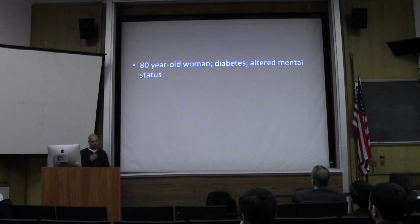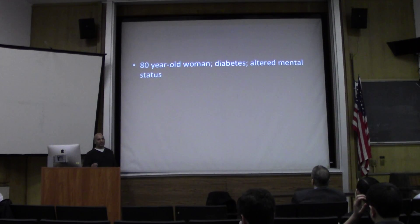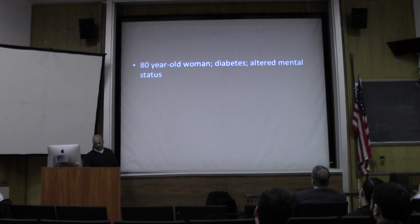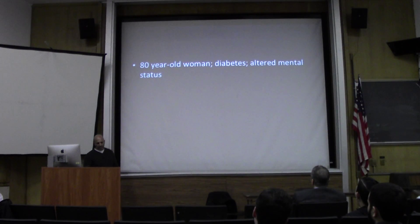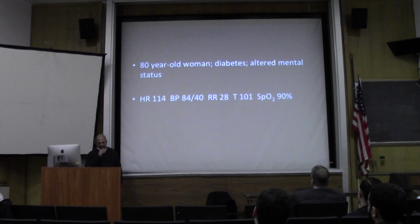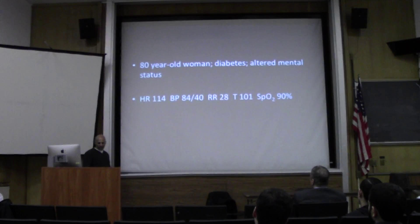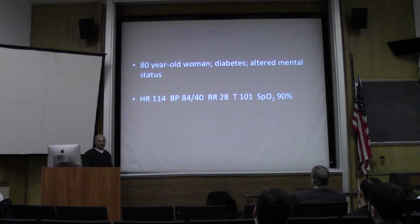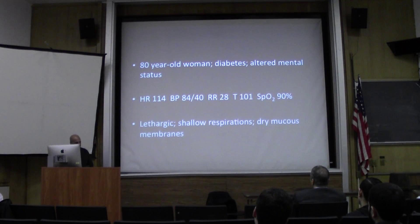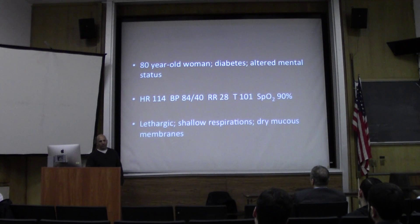You get an 80-year-old woman who has a history of diabetes, brought in by her very concerned family because she's had acute altered mental status. These are vital signs: she's tachycardic, has hypotension, tachypnea, is febrile, and has an oxygen saturation of 90%. On quick exam, she's lethargic, has shallow respirations, and dry mucous membranes.